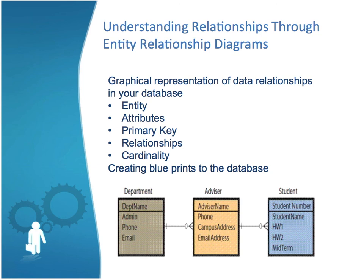To better understand relationships within a database, typically before creating one you're going to create an Entity Relationship Diagram, or ERD. You don't have to, but you're going to wish you had. It's essentially a blueprint for the database — if you're building something complex without a blueprint, you usually end up paying the price. An ERD consists of five things: entity, attributes, primary key, relationships, and cardinality.